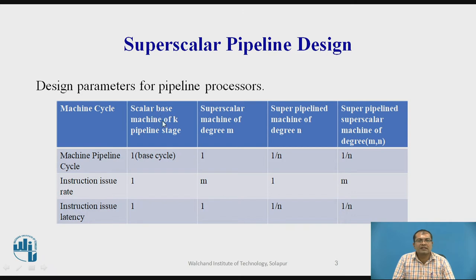The first is the scalar-based machine having K pipeline stages. Next, the superscalar machine of degree M. Next, the superpipeline machine of degree N. And the fourth is the superpipeline superscalar machine of degree M and N. We will see all four with respect to different parameters.